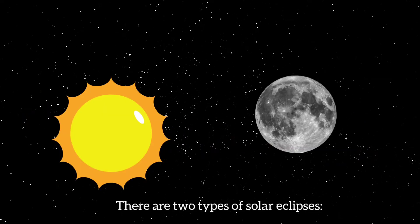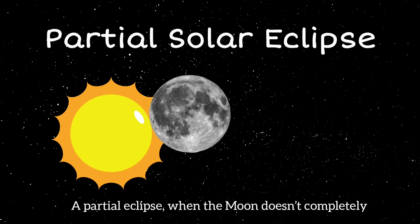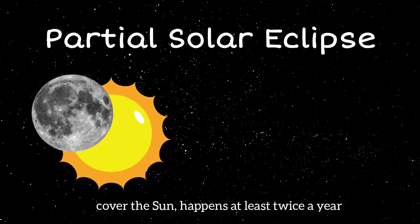There are two types of solar eclipses: partial solar eclipse and total solar eclipse. A partial eclipse, when the moon doesn't completely cover the sun, happens at least twice a year somewhere on Earth.